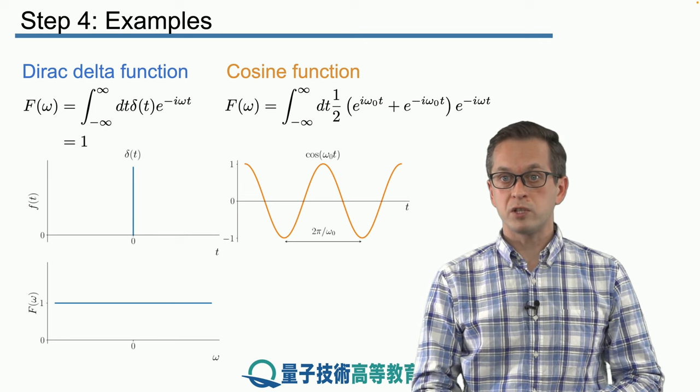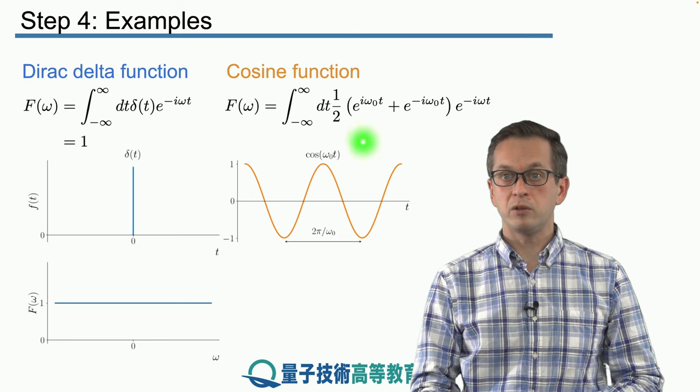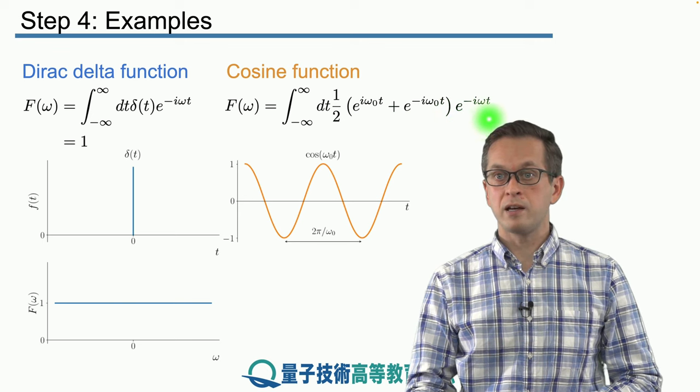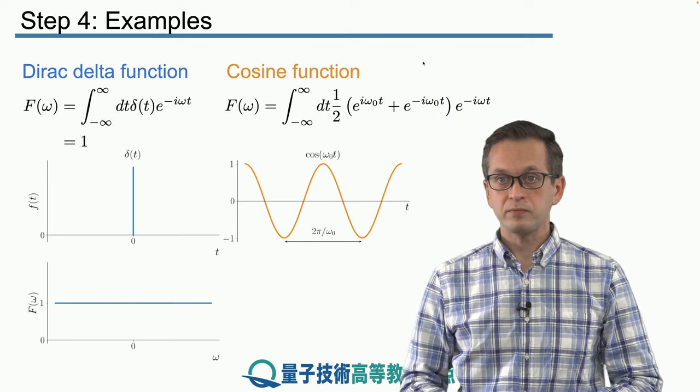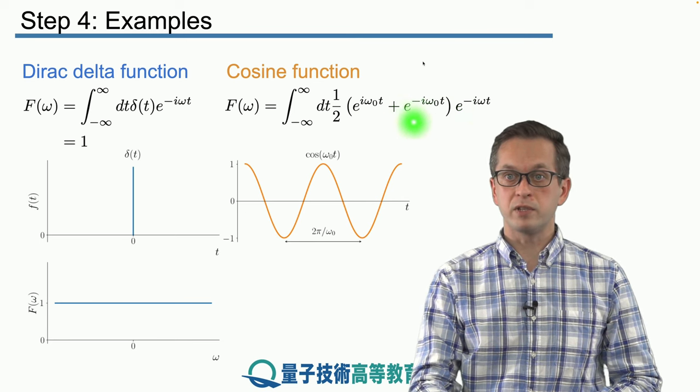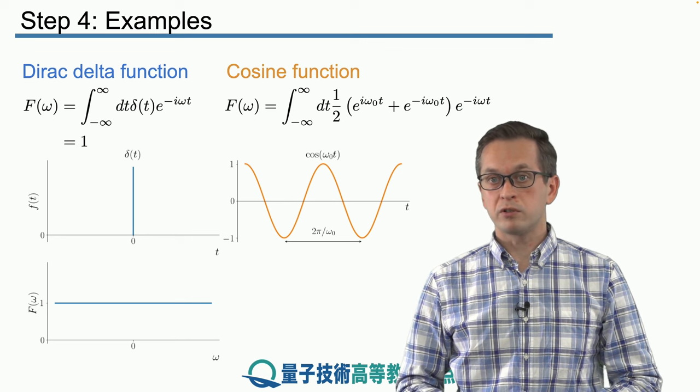So what we do is we can just multiply out. We can expand this parenthesis over here. So we will have one exponential e to the i omega naught t times e to the minus i omega t. And we will have a similar one, but there will be an extra minus in front of this i omega naught t.